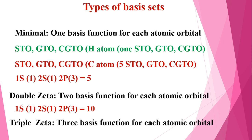Now the types of basis sets. A minimal basis set uses one basis function for each atomic orbital. For hydrogen the STO, GTO, or five contracted GTOs remain the same. For carbon, with electronic configuration 1s² 2s² 2p², there is one orbital in 1s, one in 2s, and three in 2p — so five STOs or five contracted GTOs are required as a minimal basis set.